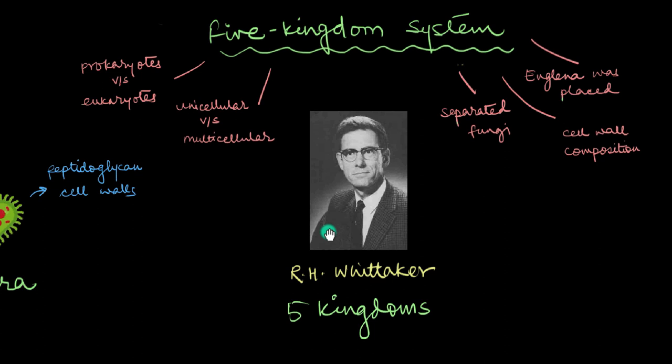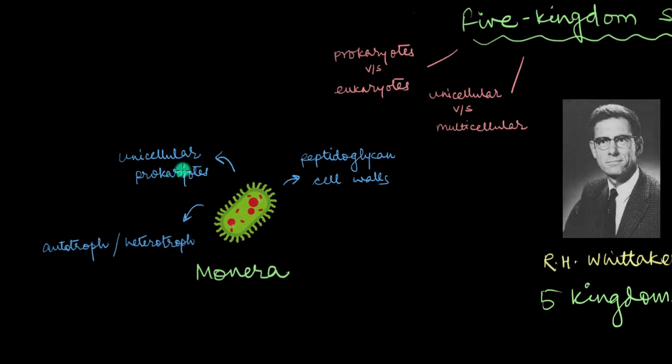It includes the simplest organisms to ever exist, the single-celled or unicellular prokaryotes or in other words, all kinds of bacteria. These organisms don't have a nucleus or organelles and while some can survive on autotrophic nutrition, others rely on heterotrophic nutrition. Most Monerans also have cell walls.